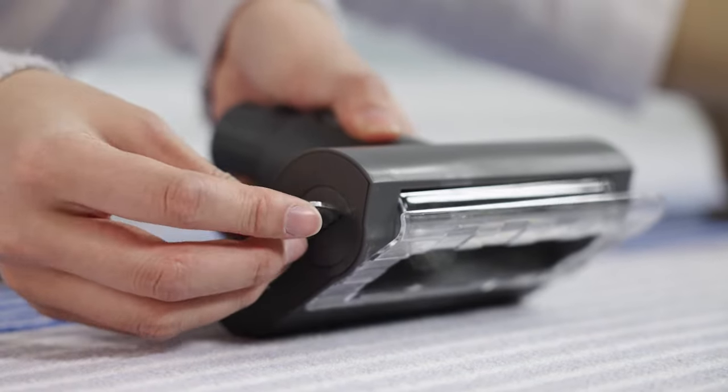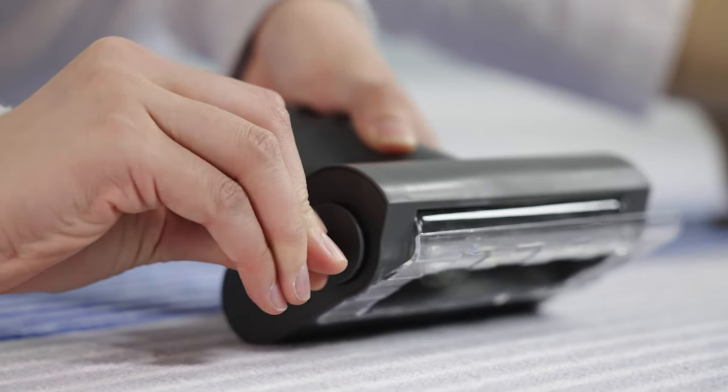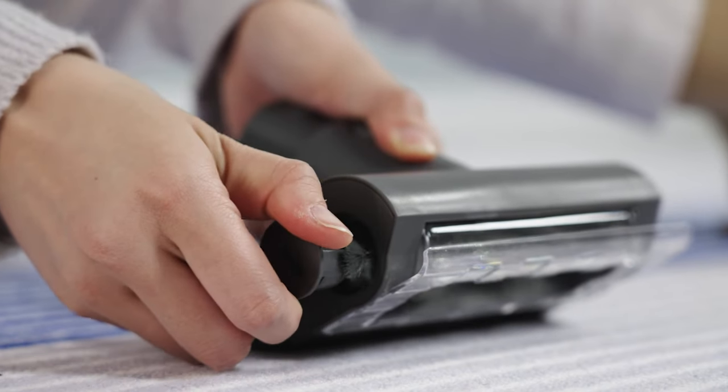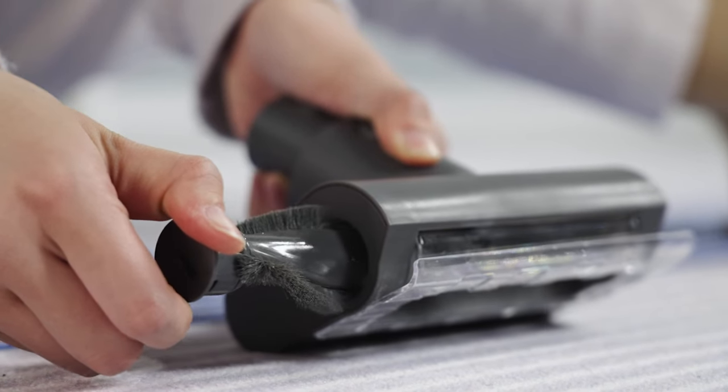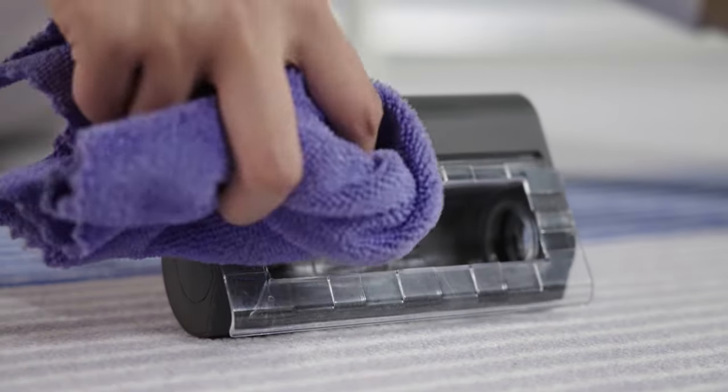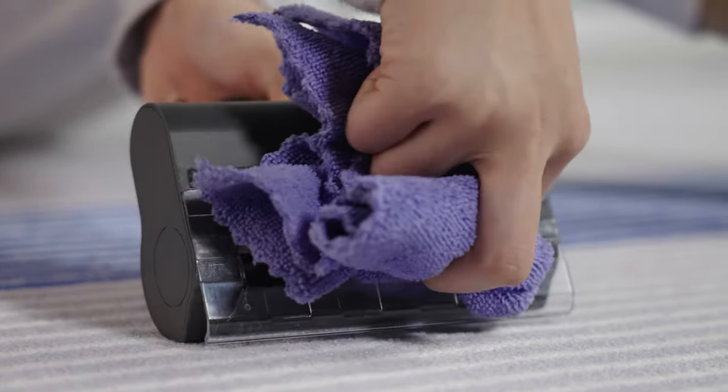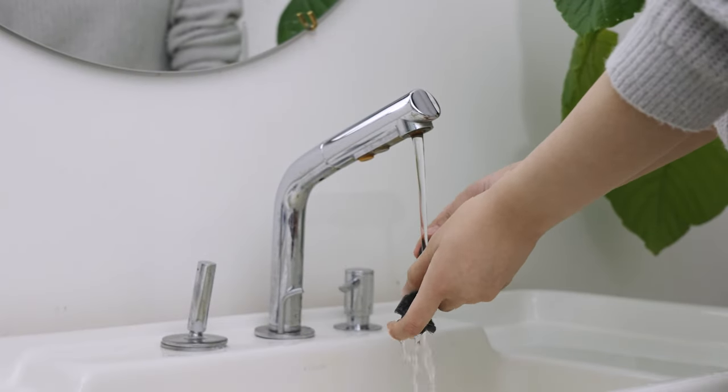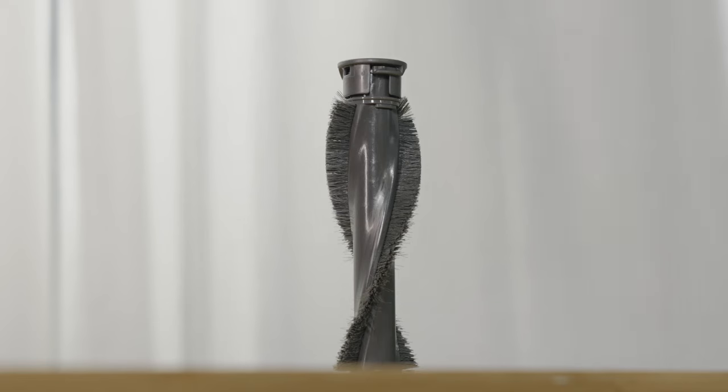Use a coin as illustrated to rotate the lock counterclockwise until you hear a click. After unlocking, remove the roller brush from the mini electric brush. Wipe the dust with a dry cloth or paper towel, then rinse and clean the brush head.